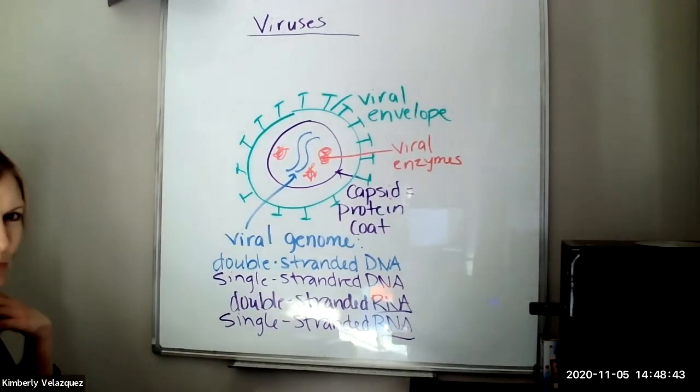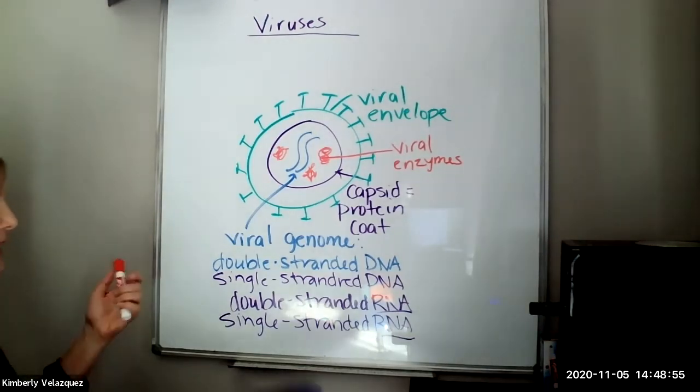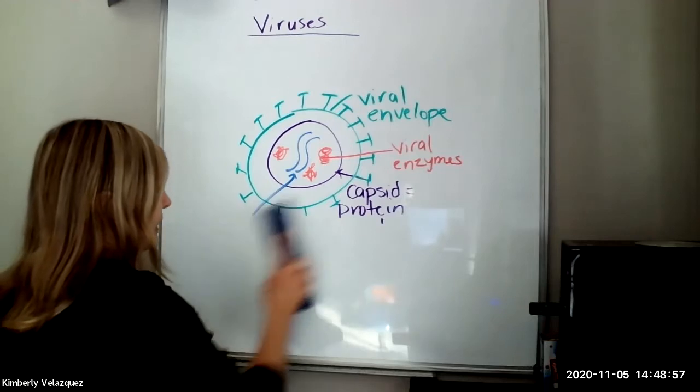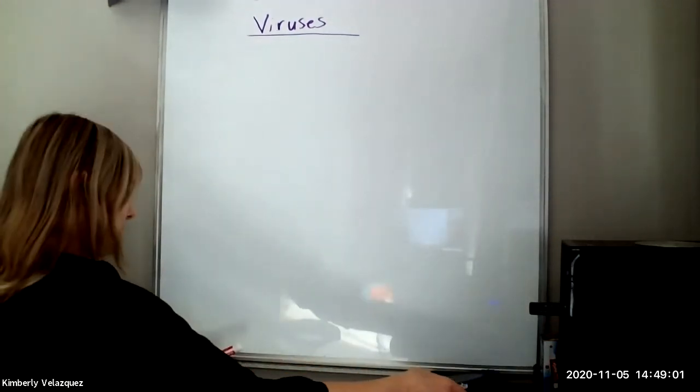So that's just a basic viral structure. Viruses do differ slightly in structure. The capsid can have all different kinds of shapes. And the phages that infect bacterial cells have really crazy shapes. And I'll show you those in another video.